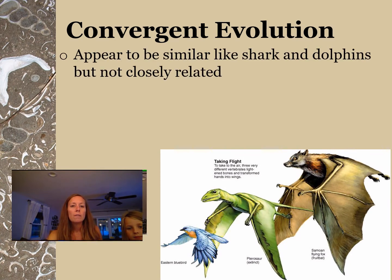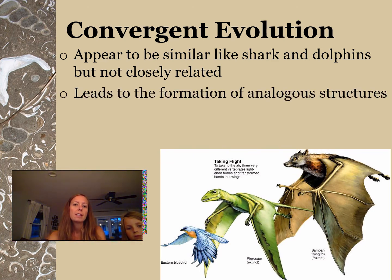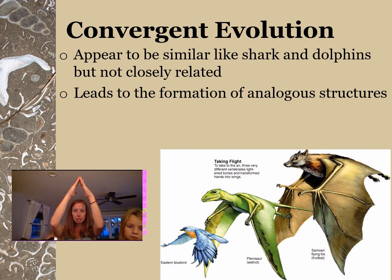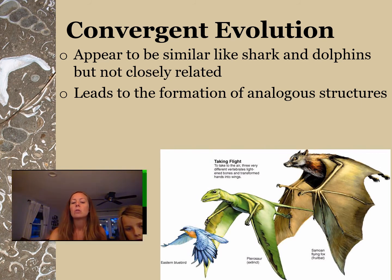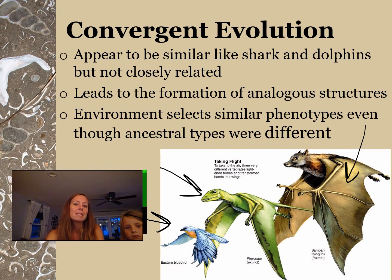Convergent evolution is when things appear to be similar — like sharks and dolphins — but they're not closely related. This leads to the formation of analogous structures. They start out different and come together because they live in the same environment. Looking at the picture: a bat, a dinosaur, and a bird are all very different, but they all have wings because they need them to survive. The environment selects similar phenotypes even though their ancestral types were very different.